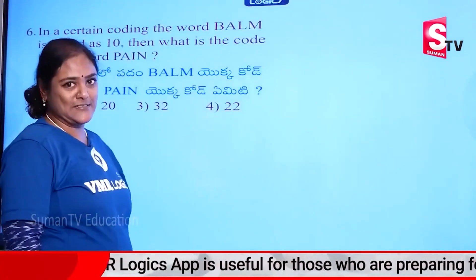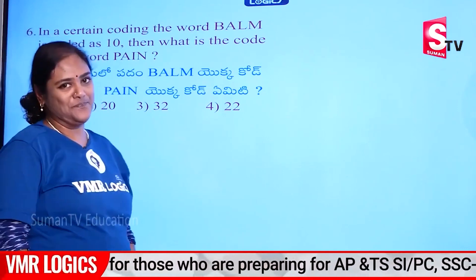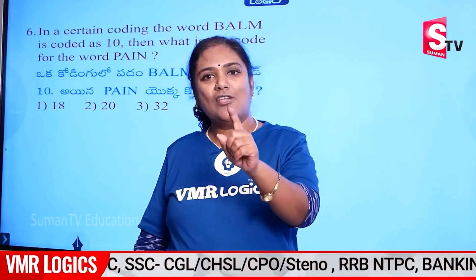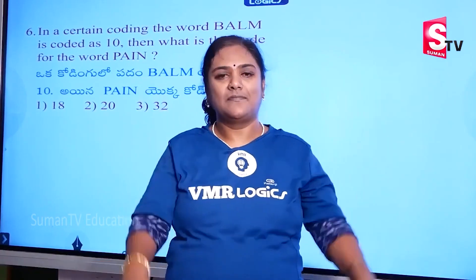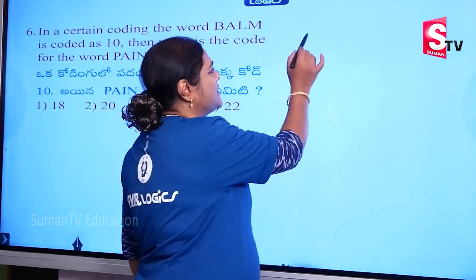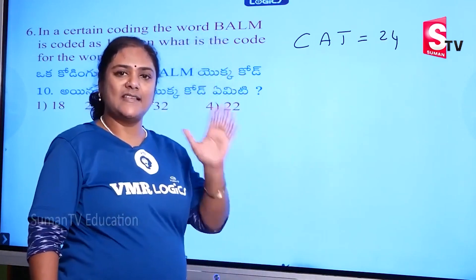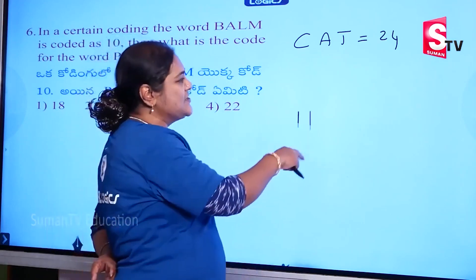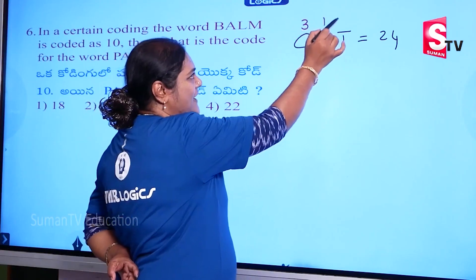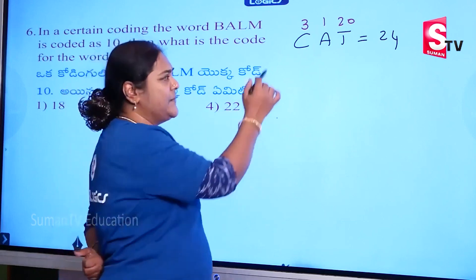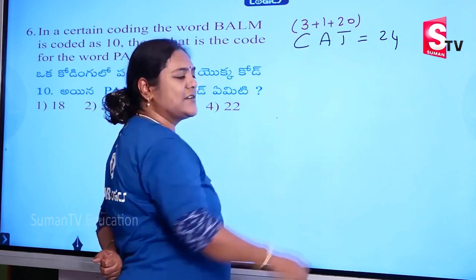Now, the next model to set: number coding. Number coding — for each place value, take the general relation. For example, CAT is equal to 24. C = 3, A = 1, T = 20 — and 3 plus 1 plus 20 is equal to 24.